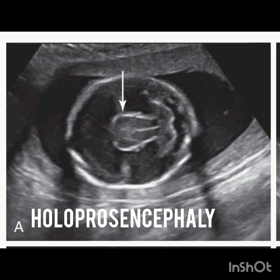Alobar holoprosencephaly is characterized by fused thalami, a single monoventricular cavity, and absence of midline brain structures such as the falx cerebri and cavum septi pellucidi, with facial abnormalities. These include cyclopia — a single eye in the forehead — hypotelorism, which is decreased space between the two eyeballs, cleft lip and palate, and proboscis, which is an appendage that protrudes from the forehead or face.